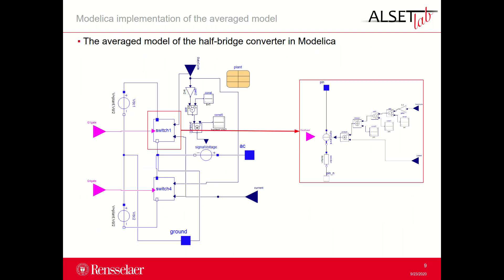Now we are going to have a look at the different systems and components. The average model of the half-bridge converter implemented in Modelica is presented in this slide. An exploded view of the switch block is also illustrated on the right. It should be noticed that for the average model the gates and their signals are not in use, but they are already implemented for the switching model of the half-bridge converter. This will make it easy to change the type of converter in the model of the whole system by simply changing the class of that component using the Modelica feature of replaceable.